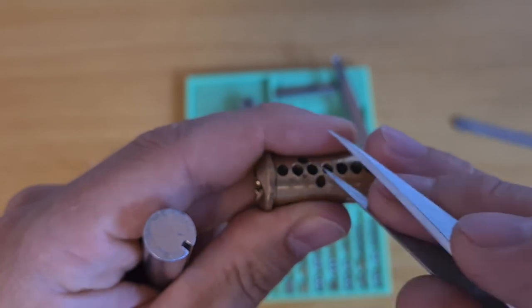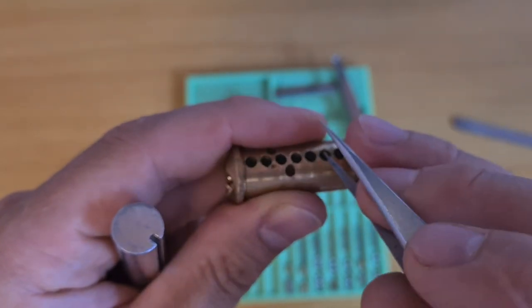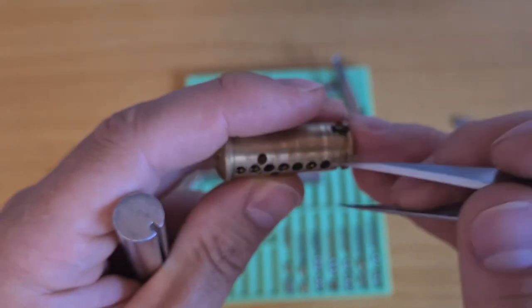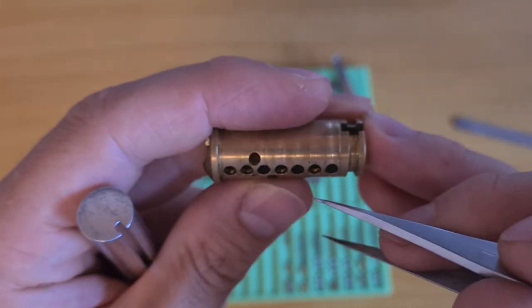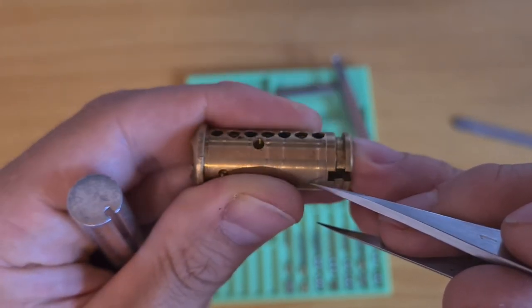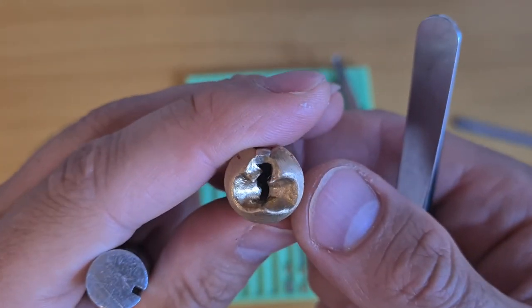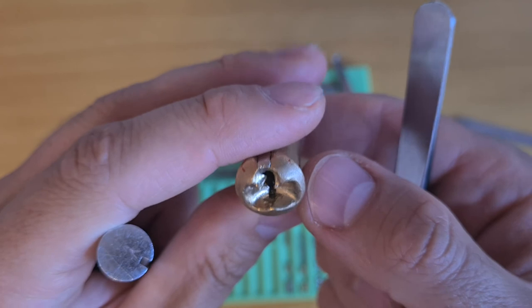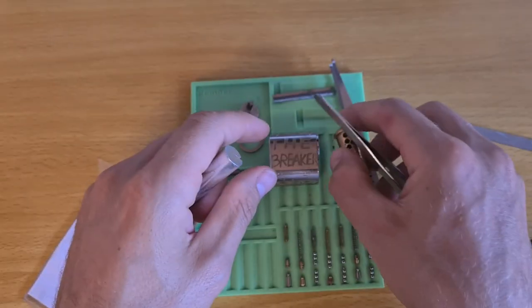The core has counter milling as usual for ASSA 700, one, two, not three, four, not five, six. So one, two, four, and six have counter milling. And of course this keyway which ends up having plenty of space for the pick.